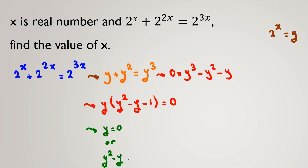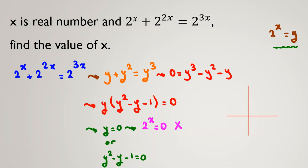We have two cases: y equals 0, or y squared minus y minus 1 equals 0. If y equals 0, then 2 to the x equals 0, which is a contradiction because 2 to the x is always positive — as you can see from the graph, it's always above zero. So the first case is impossible.